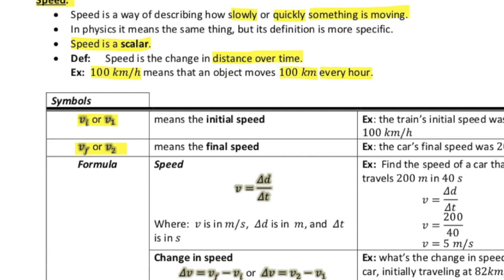And our formula for speed is really quite straightforward. It is the change in distance over time. So how far you traveled over the amount of time it took. Key takeaways, the speed is usually in meters per second. The change in distance is in meters, and the change in time is in seconds.